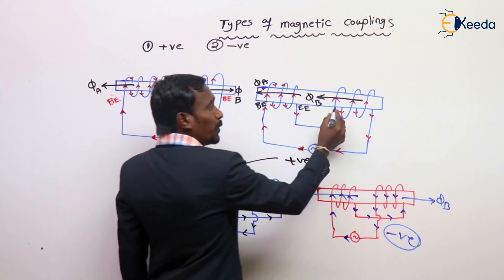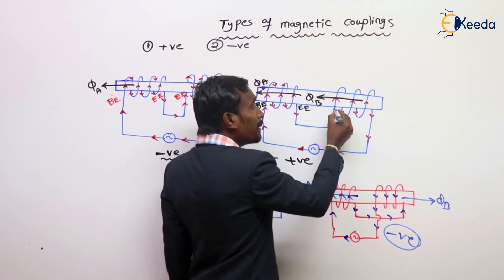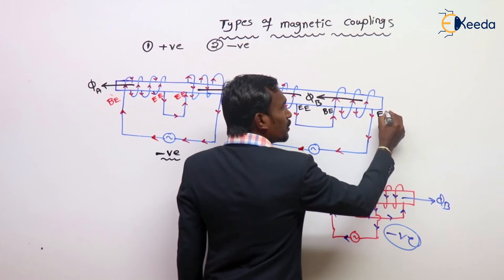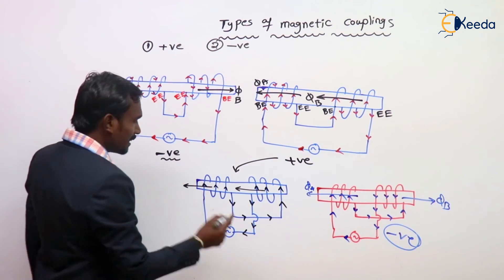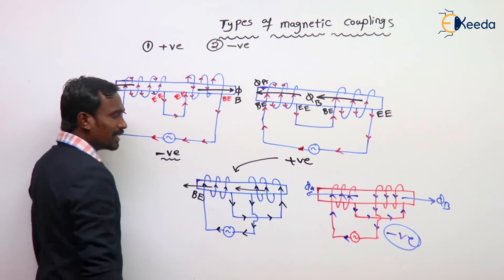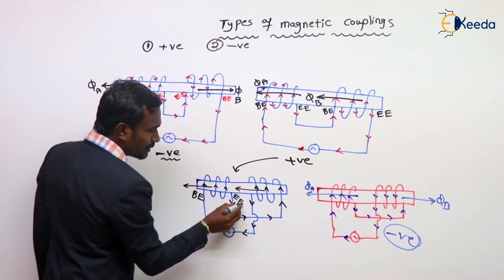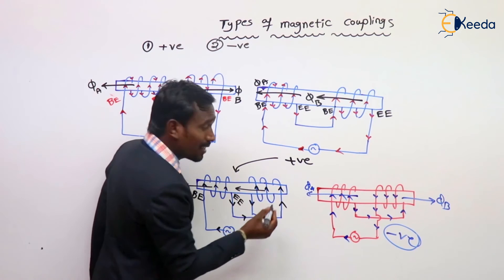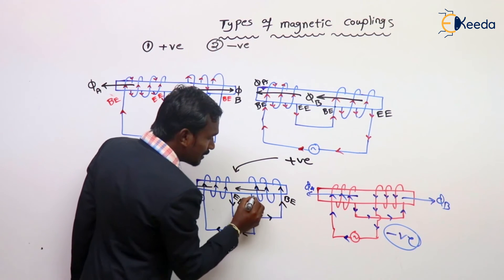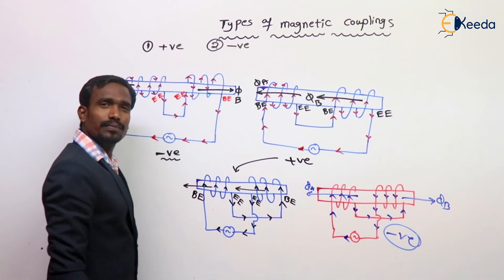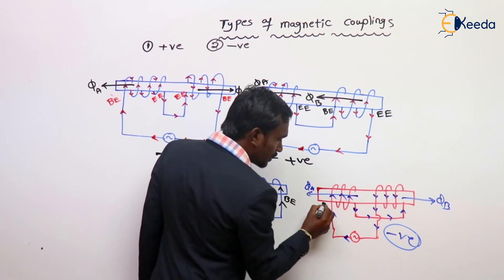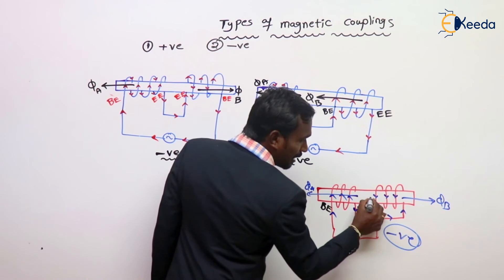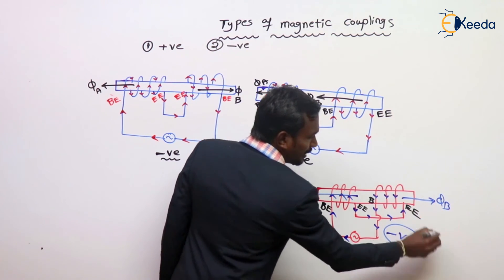See which is the beginning end? This is the beginning end because this is outside, and this is inside, so this is the ending end. Automatically, this is the beginning and this is the ending end. Here also, this is the beginning end and this is the ending end.